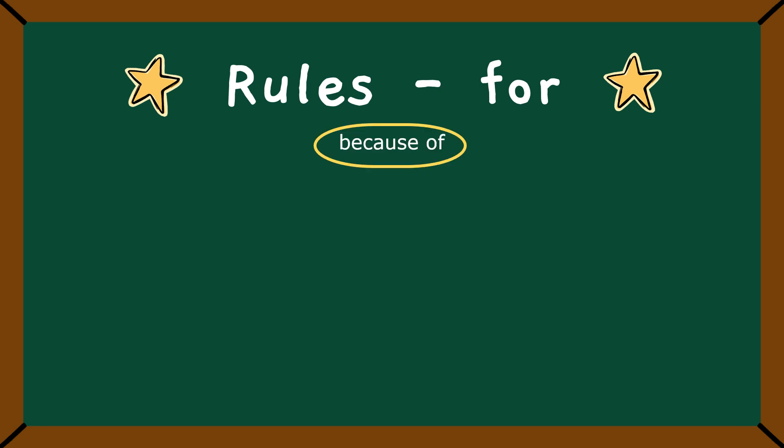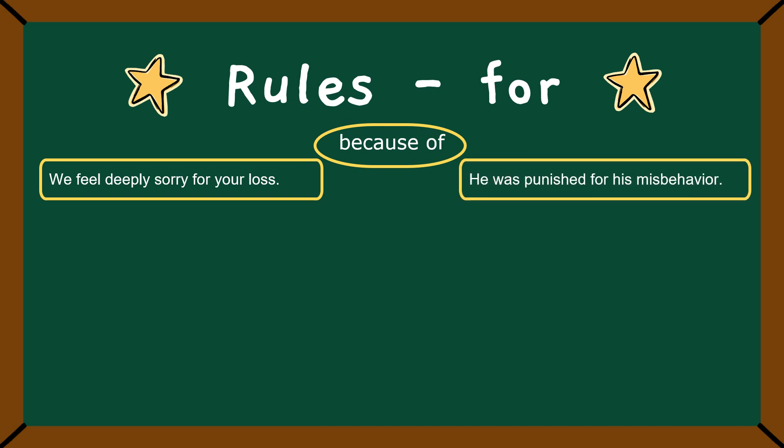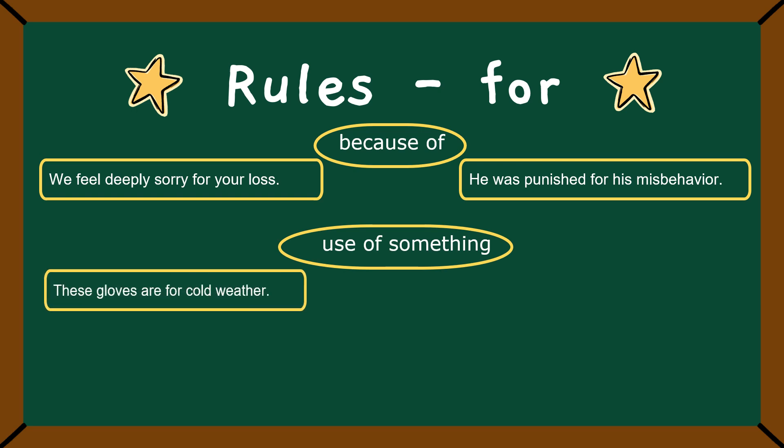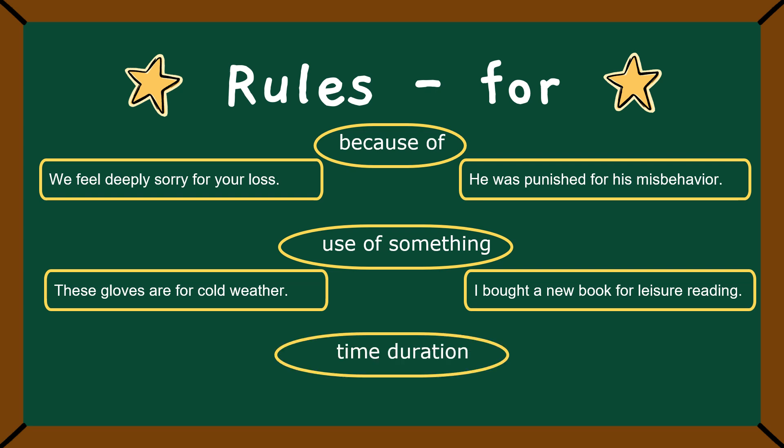Now, let's learn the rules for for. They are quite easy. For is used to tell the reason. We feel deeply sorry for your loss. For your loss means because of your loss. Or, he was punished for his misbehavior. He was misbehaving. That's why he was punished, which shows for always shows the reason. Or, use of something. For example, why we use these gloves? These gloves are for cold weather. We use them for cold weather. Or, I bought a new book for leisure reading, for simple reading. That's why I have bought the book.